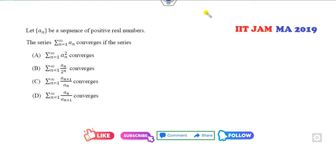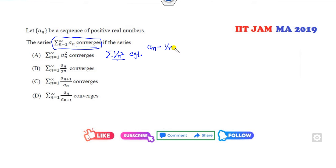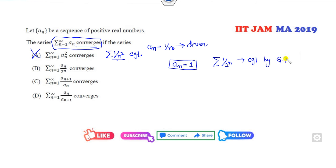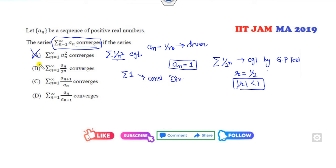Which of the following: if the series Σa_n/2^n is convergent? Trying a_n = 1: gives Σ1/2^n, convergent by geometric test (r = 1/2 < 1). But the series Σa_n = Σ1 is constant and divergent since it's non-zero. So the first option is cancelled. If Σa_n/2^n converges, that does not imply Σa_n converges — this option is also cancelled.